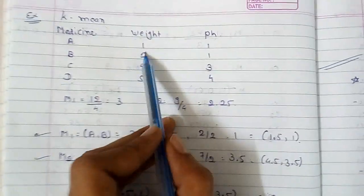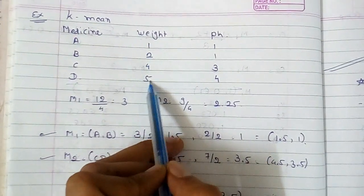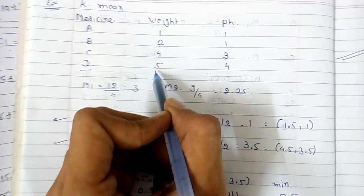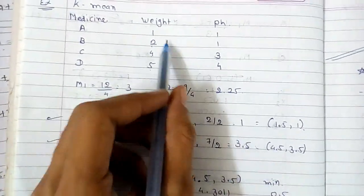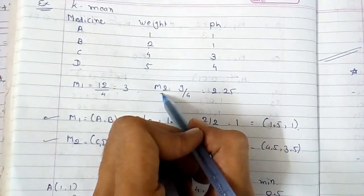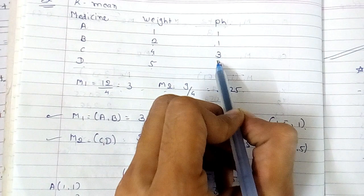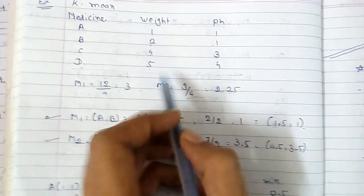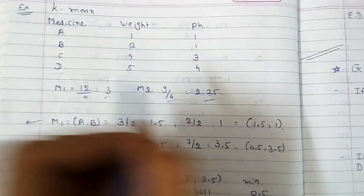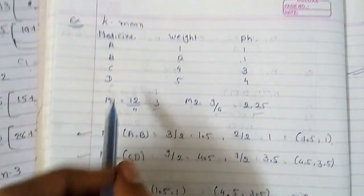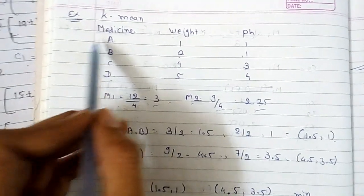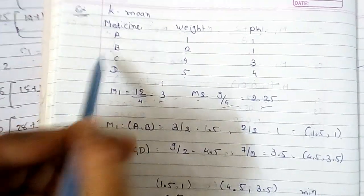How to find out m1? Add all the data for the x dimension: 1 plus 2 plus 4 plus 5 divided by 4. And m2 is equal to 1 plus 1 plus 3 plus 4 divided by 4. So you will get m1 and m2.